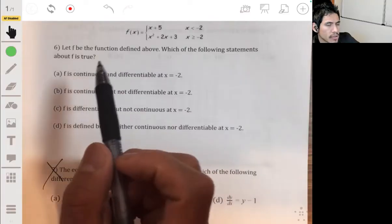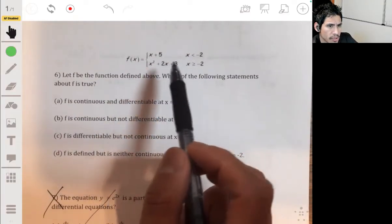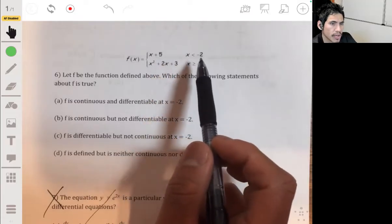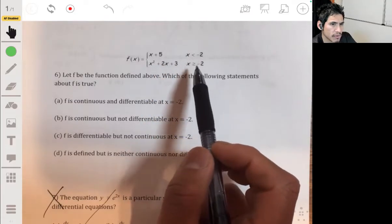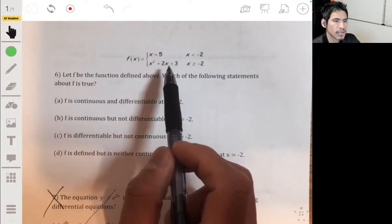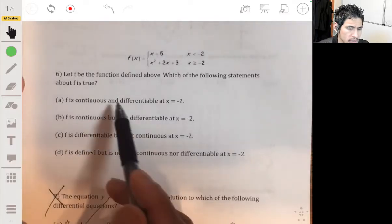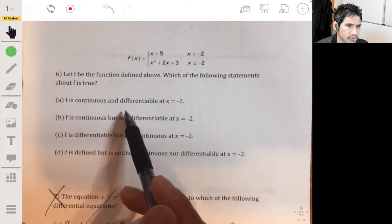All right, problem six. We got this function, piecewise function shown here for the interval x is below negative two and greater than or equal to negative two, so we have a linear equation and then a quadratic. You have to figure out which of these are true.